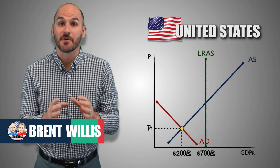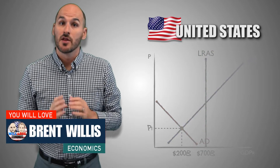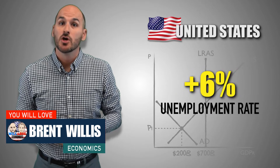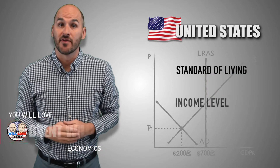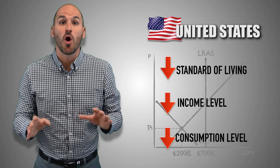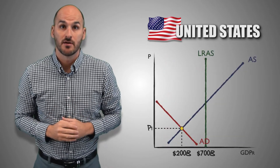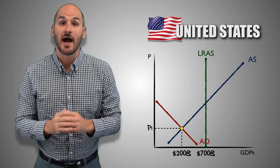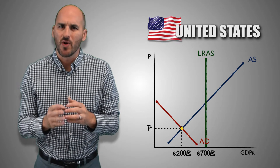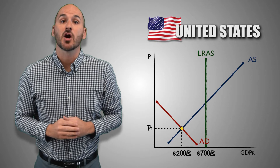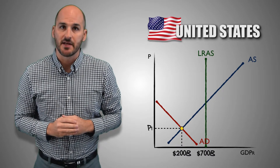Let's say the United States economy is experiencing a recessionary gap of $500 billion. The unemployment rate is above 6% due to an increase in cyclical unemployment. The standard of living, income, and consumption levels are all in the dumps, and the economy just isn't recovering. Congress decides it's time to act, and so it begins to debate policy options to correct economic conditions and return the economy to equilibrium. Congress settles on an increase in government spending.